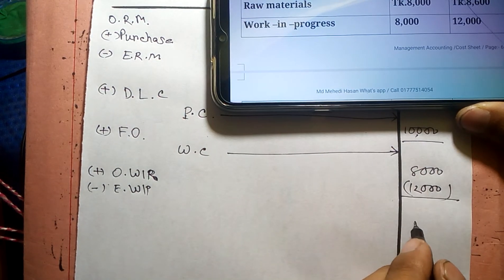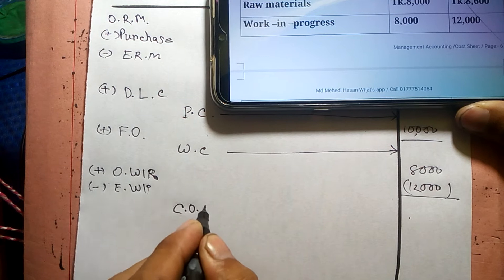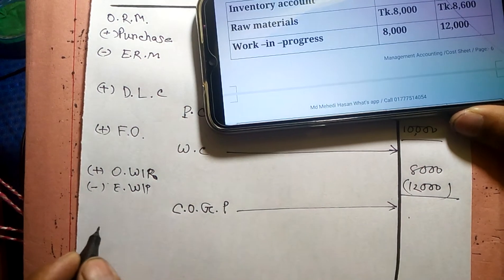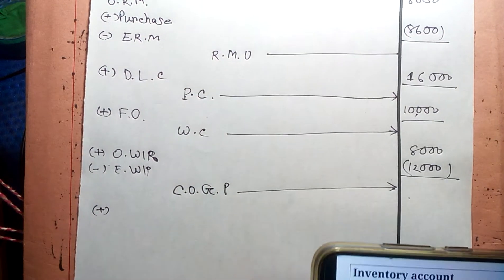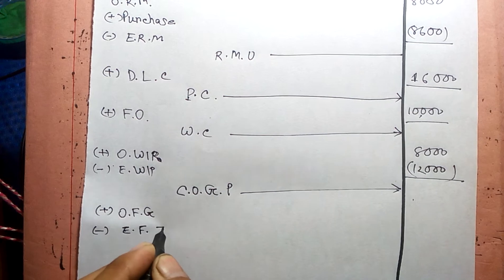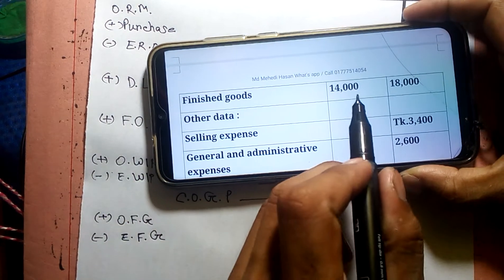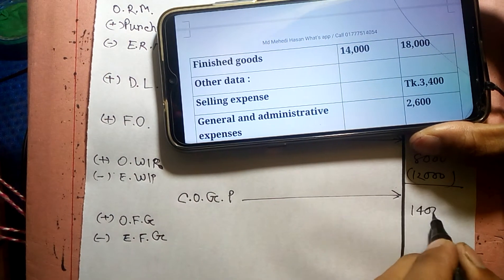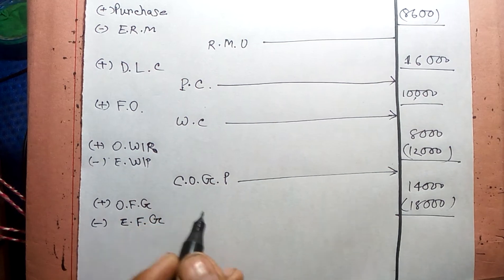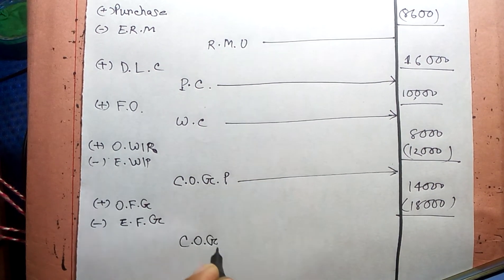After adjusting the works cost for the opening and ending work in process, we get the cost of goods production. Then from the cost of goods production, we adjust for opening finished goods and ending finished goods to arrive at the cost of goods sold. Opening finished goods plus cost of goods production minus ending finished goods gives us the cost of goods sold.